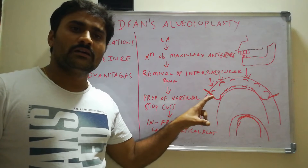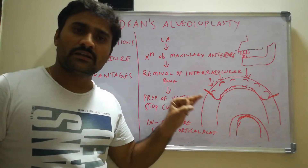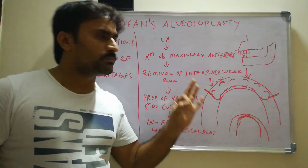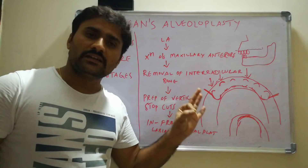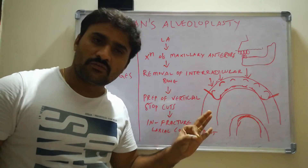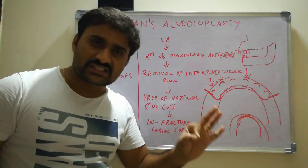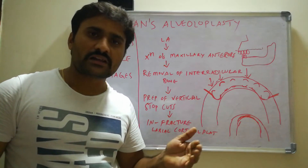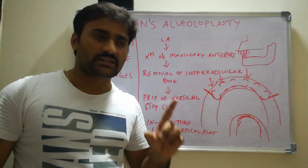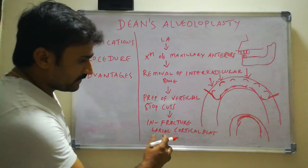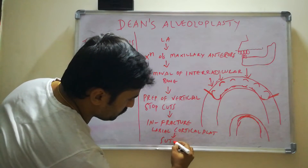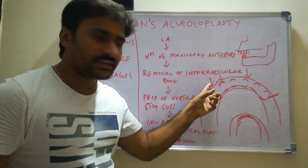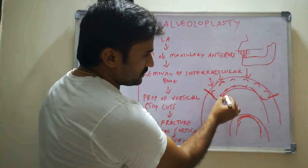Infracturing the labial cortical plate removes buccal undercuts, large overjet, or proclination of the premaxilla. Dean's alveoloplasty is done in cases of anterior maxillary excess — otherwise called proclination or large overjet. You must remember that point. After the surgical steps, the next step is suturing. Interrupted sutures are placed at each interdental papilla region.